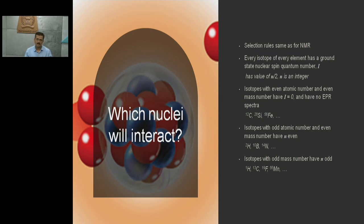So how does it work? What are the selection rules? The same selection rules used in NMR also apply. Every isotope of elements in its ground state has its own quantum number - N by 2, where N is an integer. Isotopes with even atomic number and even mass number have I equal to 0 and don't show EPR spectrum. But isotopes with odd atomic number or even mass number have N equal to even. Similarly, odd mass number and N odd. These are typical isotopes which show EPR spectra or not - mainly based on I value not equal to 0. Then they show EPR spectra.